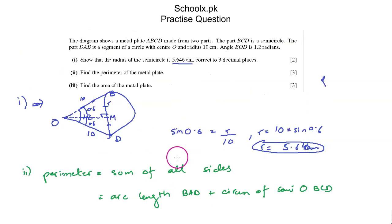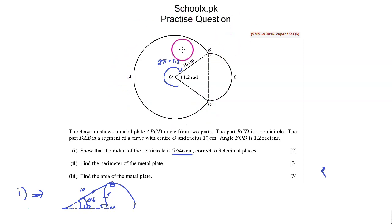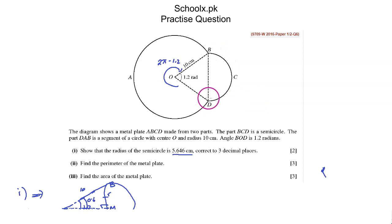Moving on to part 3, we need to find the area of the metal plate. To do this, I need to find the area of segment BAD, add the area of triangle BOD, and then add the area of semicircle BCD.